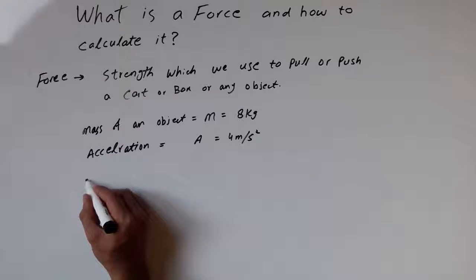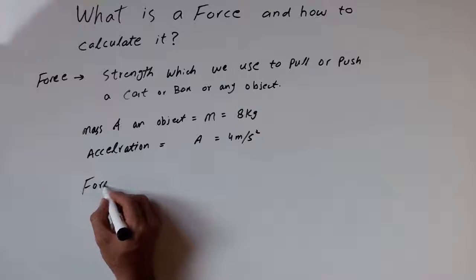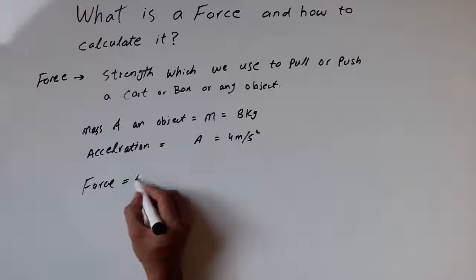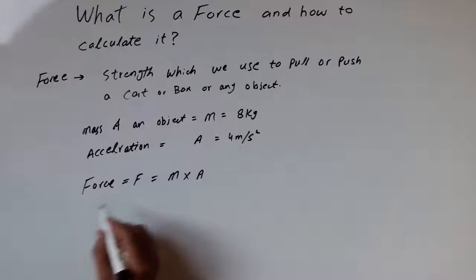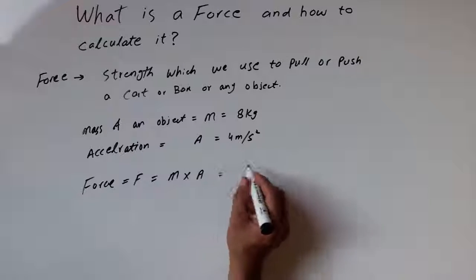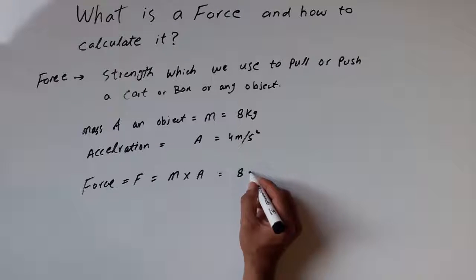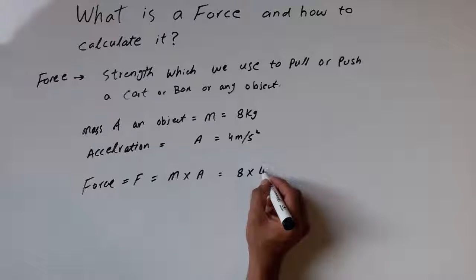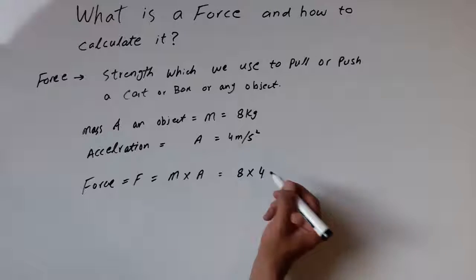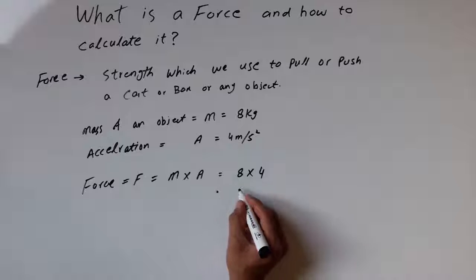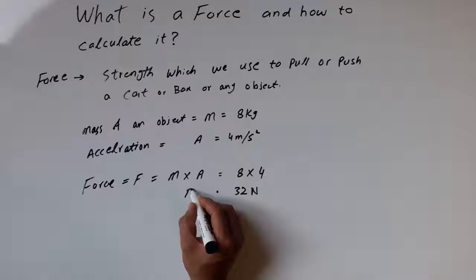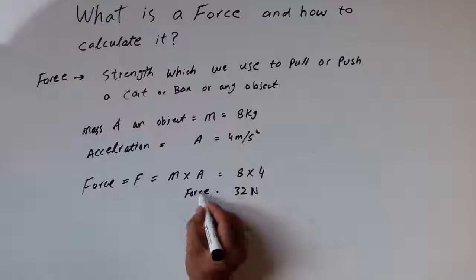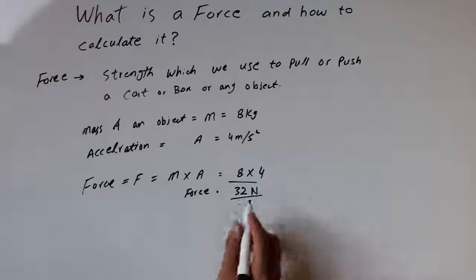The formula of force is F is equal to m multiplied by a — mass multiplied by acceleration. We have mass 8 and acceleration 4, so the force is 32 newton.